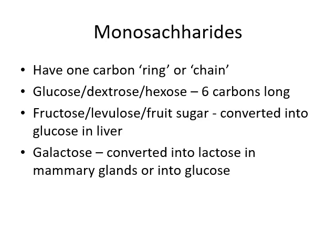Another monosaccharide is fructose, which is more often than not found in its left-handed molecular form — the synonym being levulose. Levulose specifically refers to the left-handed version of fructose, and fructose is also classically referred to as fruit sugar. Fructose has to be converted into glucose in the liver. And then the other monosaccharide is galactose, which is converted into glucose via the glycogenic pathway, which we'll have a quick look at later in this presentation.